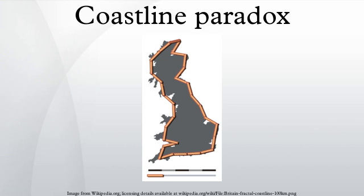Extreme cases of the coastline paradox include the fjord-heavy coastlines of Norway, Chile, and the Pacific Northwest of North America. From the southern tip of Vancouver Island northwards to the southern tip of the Alaska Panhandle, the convolutions of the coastline of the Canadian province of British Columbia make it over 10% of the entire Canadian coastline — 25,725 km out of 243,042 km — over a linear distance of only 965 km.